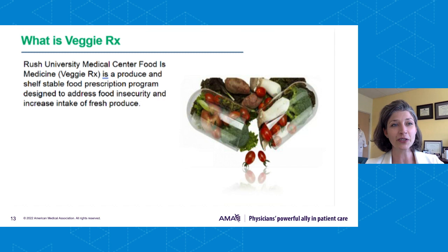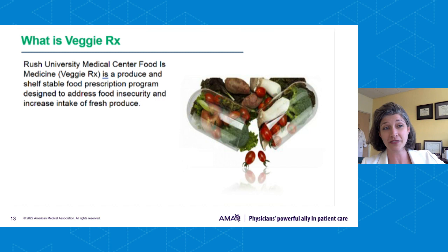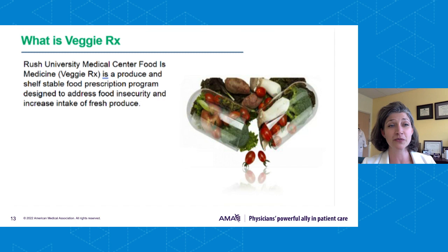At Rush, we're at a second level in how we're addressing SDOH. We actually have a Veggie RX program that started before we were even screening for social determinants of health within the clinic. Now we're not only screening — we're linking people to community resources and starting to fill in gaps we've identified. We've actually opened our own food pantry with fresh fruits and vegetables in one of the buildings where the majority of our primary care patients are seen.